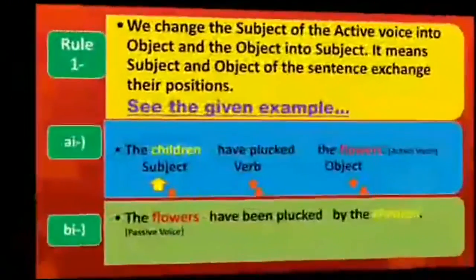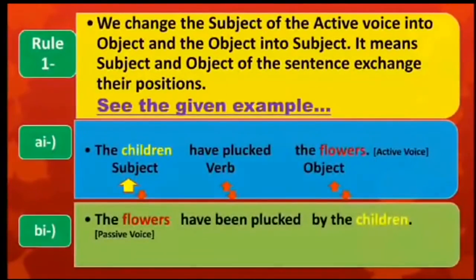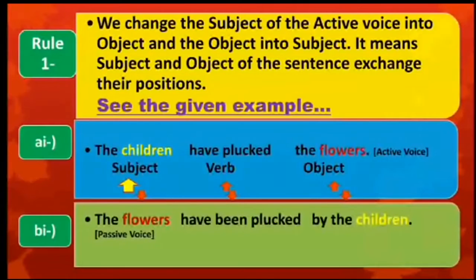Rule 1: We change the subject of the active voice into object and the object into subject. It means subject and object of the sentence exchange their position. See the given example. In the given example, the subject, the children, has exchanged its position with the object, the flowers.